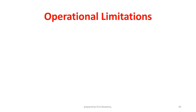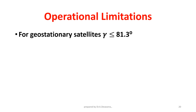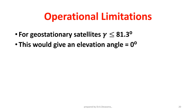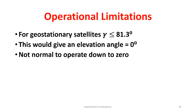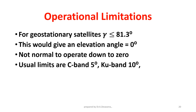Operational limitations: for geostationary satellites, the value of gamma is less than or equal to 81.3°, which gives an elevation angle of approximately 0.3°. It is not normal to operate down to 0°. Usual minimum elevation angle limits are: for C band, 5°; for Ku band, 10°; for Ka and V band, 20°.